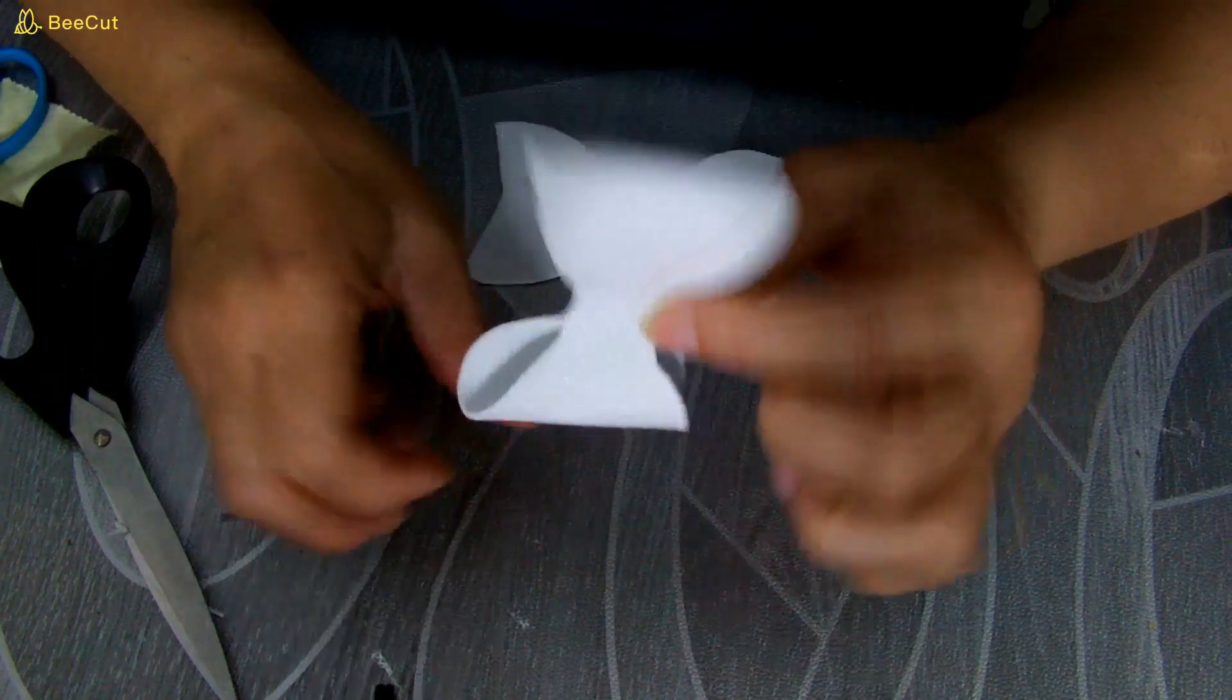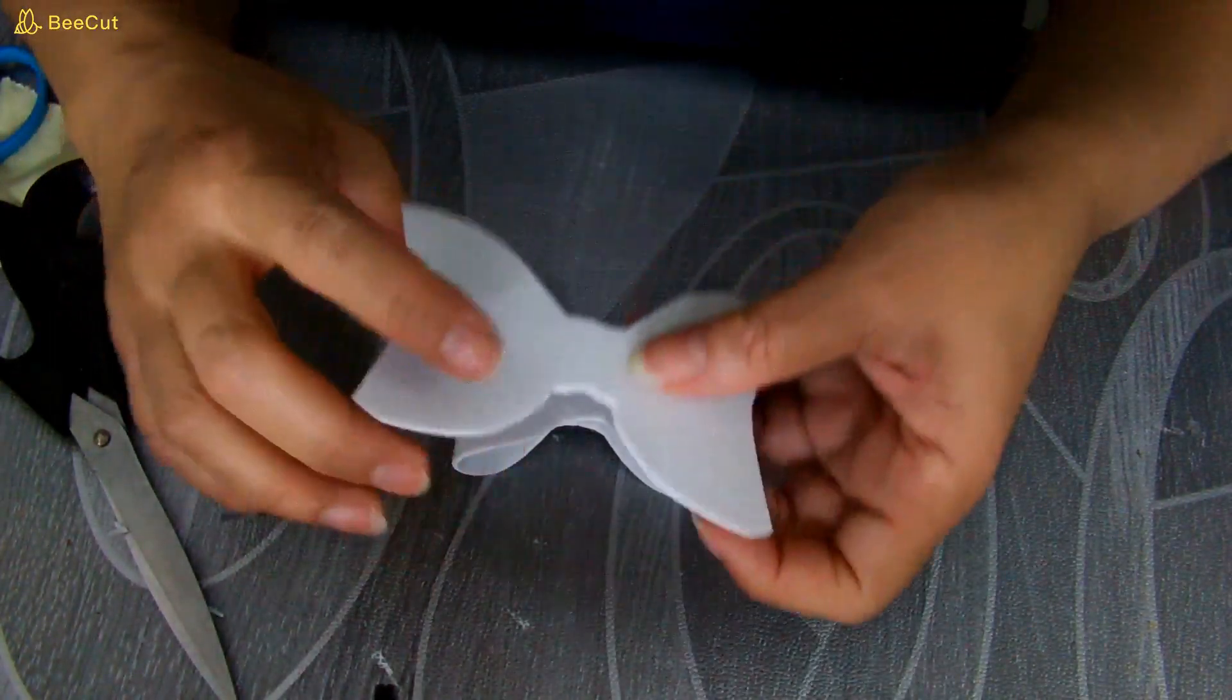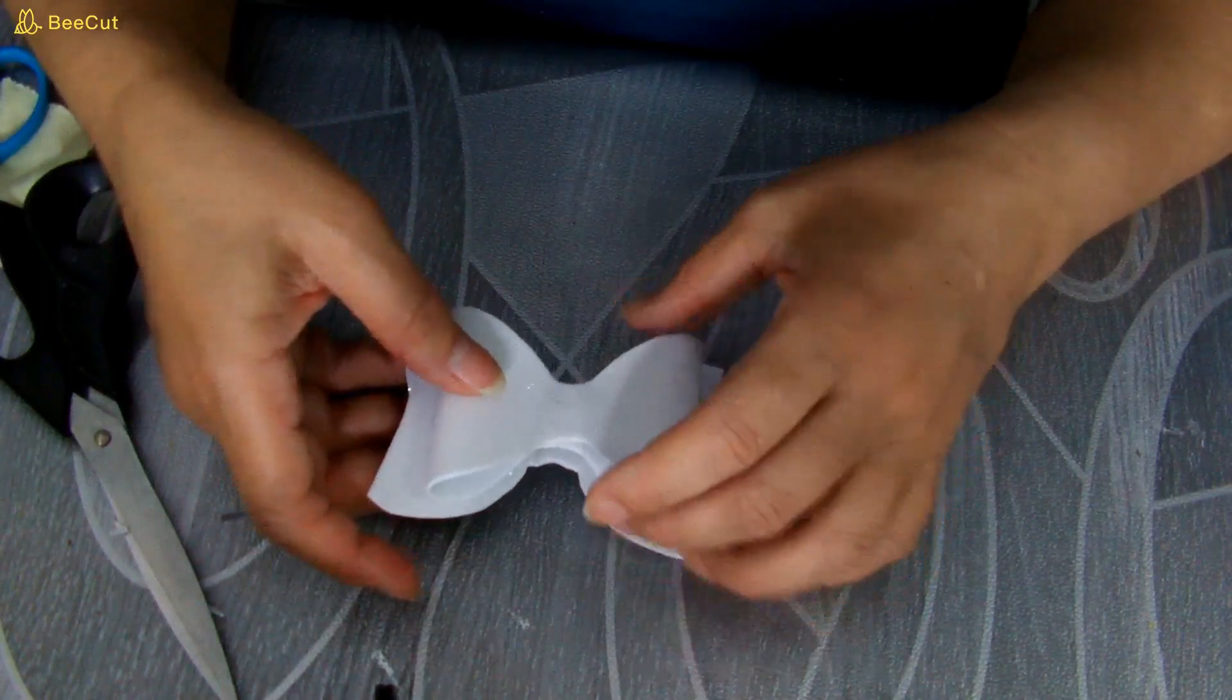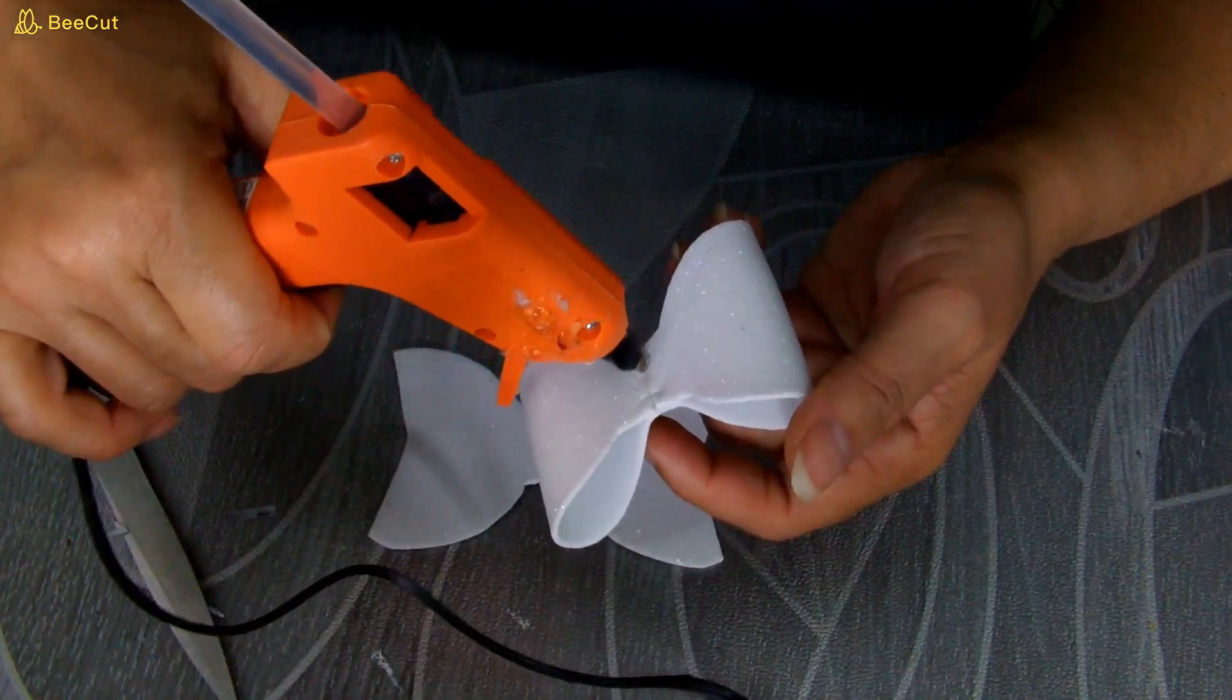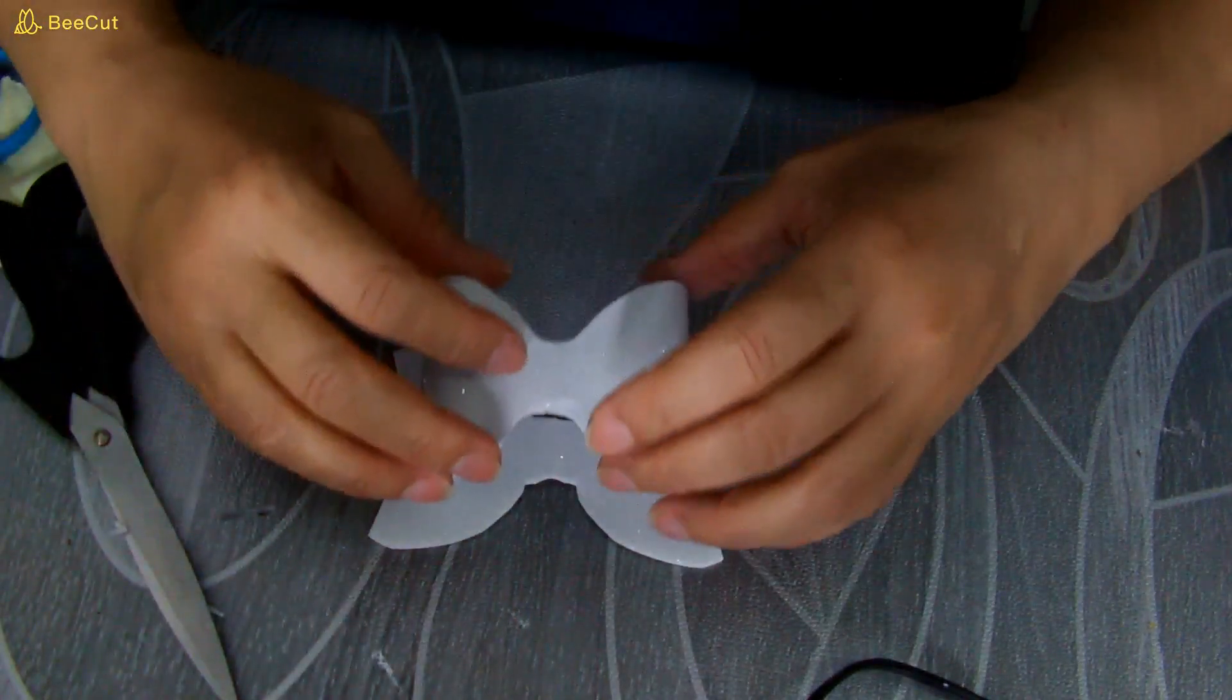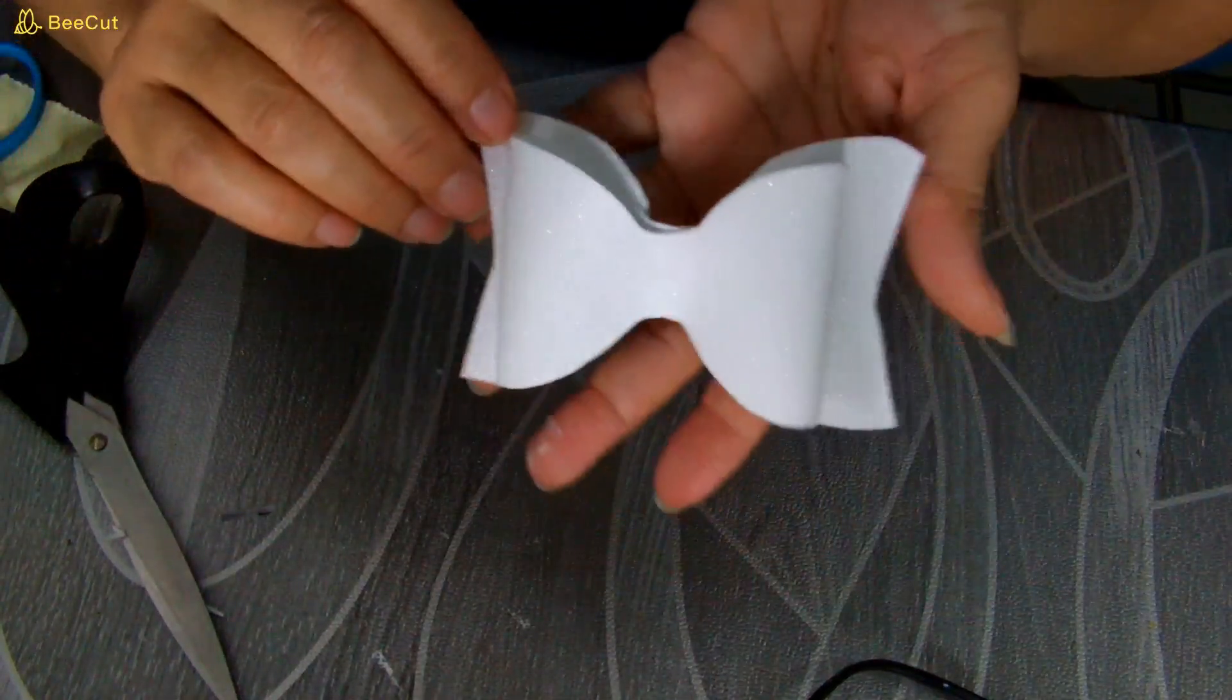Y voy a pegar ahí. Y ya después que lo tenemos así ya pegadito, miren qué bonito lazo se hace. Y esto lo vamos a poner aquí encima de este. Este lo vamos a poner encima de este, aquí de este lado donde pegamos. Vamos a poner un poquito de silicón. Y lo voy a poner aquí bien centradito así. Miren qué bonito se ve.